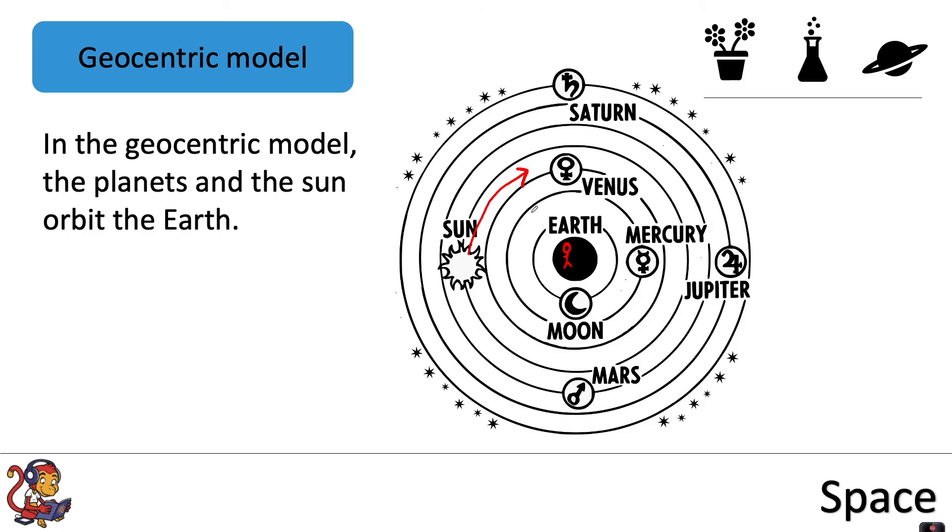So they used to think that the Earth was at the centre and this model is the geocentric model, but now we understand that the Sun is at the centre and it's the planets that orbit the Sun.